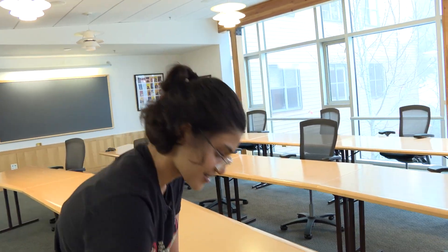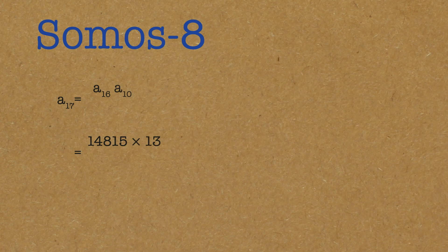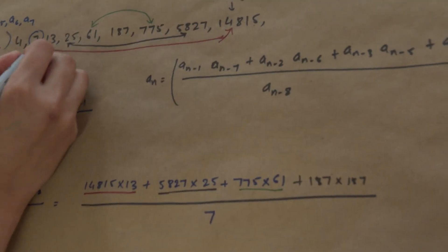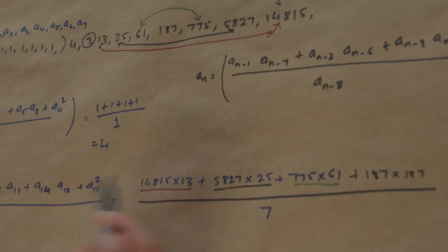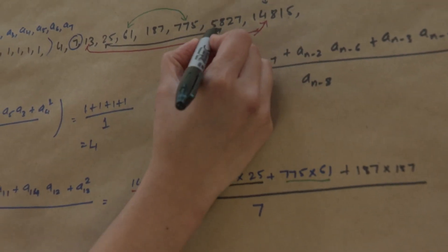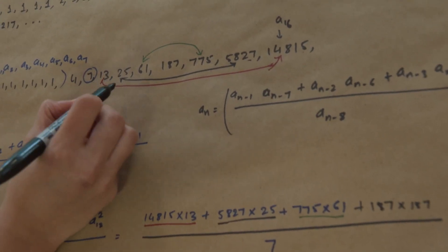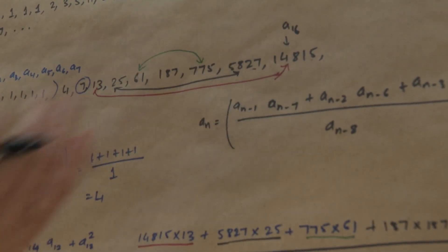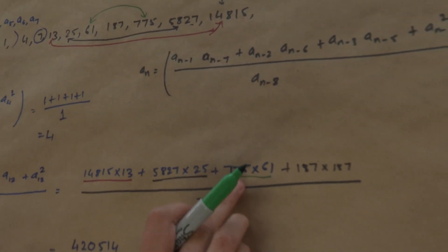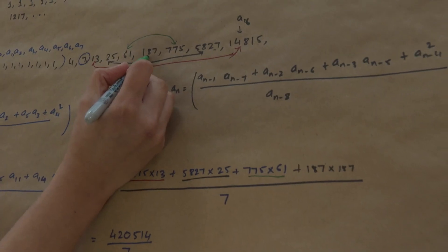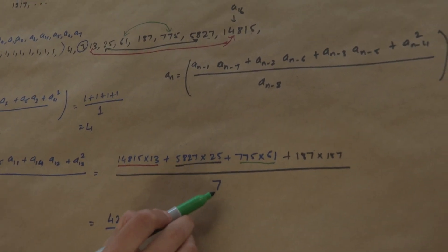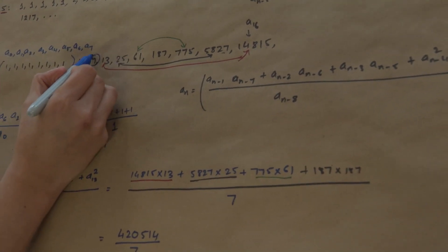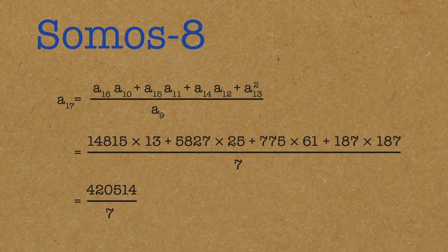So what is the 17th digit? You have the 16th term times the 10th term, plus 15th times 11th, plus 14th times 12th, plus 13th squared, all divided by the 9th term. That gives us: 5827 times 25, plus 775 times 61, plus 187 squared, all divided by 7 — which equals 420,514 divided by 7. And it's not divisible by 7. So it's a fraction — the rule has been broken.